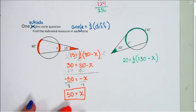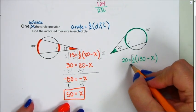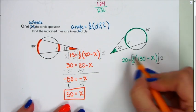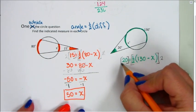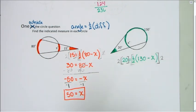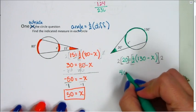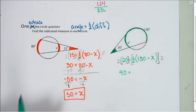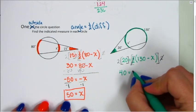That's going to give me 40 equals 130 minus x.